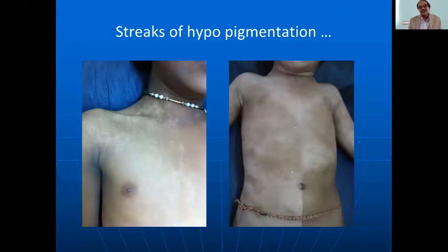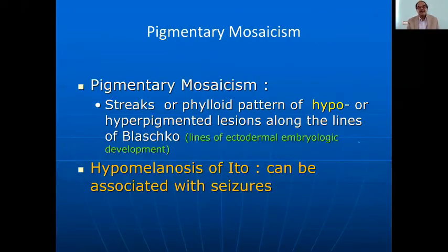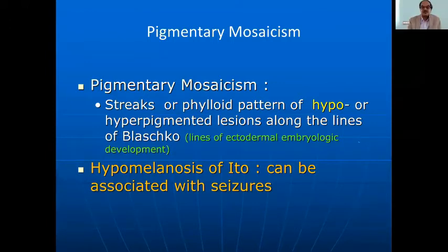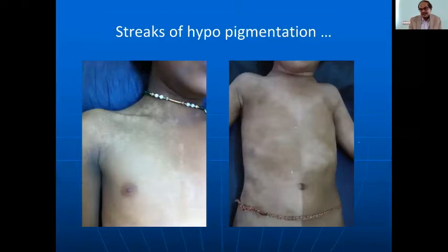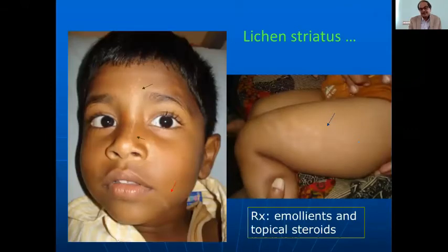Sometimes a child is brought with streaks of hypopigmentation in checkerboard or digital-like patterns — this is called pigmentary mosaicism. There will be streaks or swirled patterns of hypo- and hyperpigmented lesions along the lines of Blaschko, also called hypomelanosis of Ito. Importantly, it can be associated with seizures, and in about 50% of patients other organ systems are also involved.